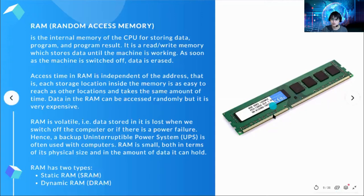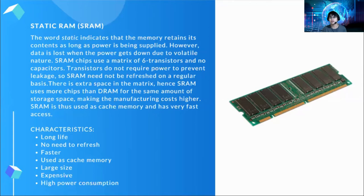When we say SRAM or static RAM, the word static indicates that the memory retains its contents as long as power is being supplied. However, data is lost when the power goes down due to its volatile nature. SRAM chips use a matrix of six transistors and no capacitors. Transistors do not require power to prevent leakage, so SRAM does not need to be refreshed on a regular basis. SRAM uses more chips than dynamic RAM for the same amount of storage space, making manufacturing costs higher. Static RAM is used as cache memory and for very fast access.